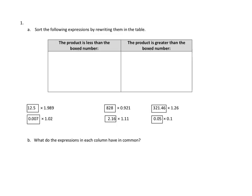Let's take a look at problem number one. We're supposed to sort the following expressions by rewriting them in the table. Now we've got six of them down here, and we're supposed to sort them into one of these two boxes. Either the product is less than the boxed number, or the product is greater than the boxed number. So I'm going to leave a lot of this work for you, but I want to take a look at this one over here. I'm going to pick one of the more complicated ones. The number we start off with is 321 and 46 hundredths, and then we are multiplying it by this number. So the question is, what happens to this number when we multiply it by this number?